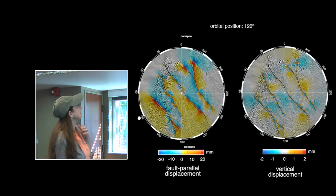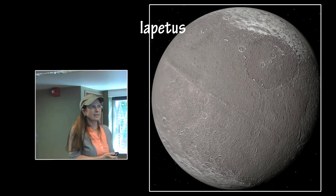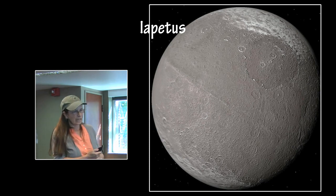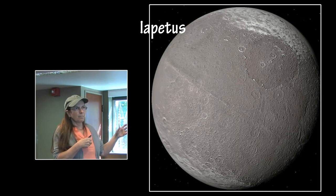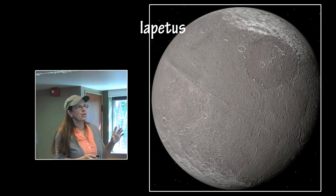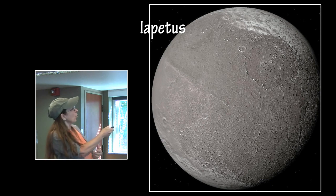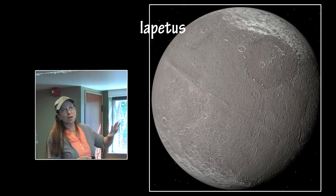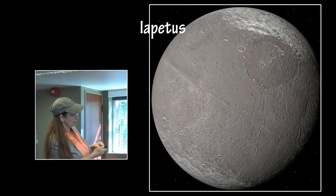Iapetus is a really odd moon — it has very dark areas and very bright areas. Iapetus is locked in synchronous rotation and orbits very slowly. It is thought that the dust and ice from all of the other moons of Saturn settle down on the equatorial region of Iapetus, and then when it gets to a position where it's receiving radiation, the radiation warms that darker material, causing the icy parts to sublimate. They settle further away in the polar regions, so the dark areas keep getting darker and the light areas keep getting brighter.